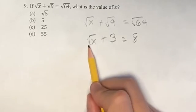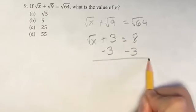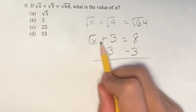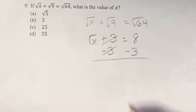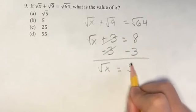So now we have the square root of x plus 3 is equal to 8. If we subtract 3 from both sides, 3 minus 3 is 0, so we have the square root of x, which is equal to 8 minus 3 is 5.